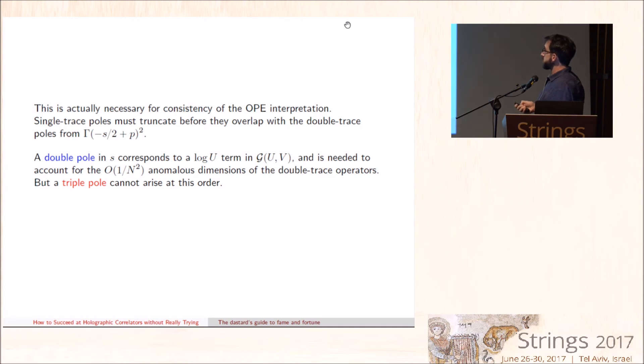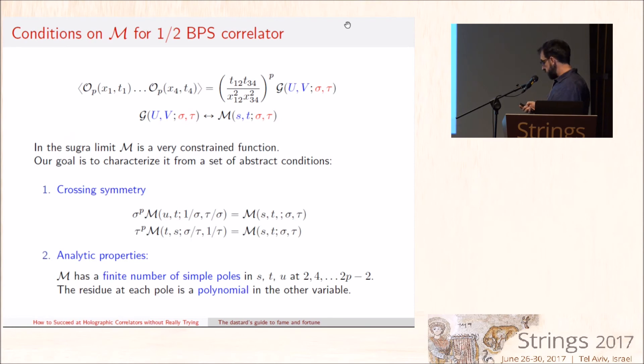If there wasn't a single trace pole that overlapped with a double trace pole, then we would find a triple pole, and a triple pole would give us a log-squared term. A single log of U has a natural interpretation as a correction to the anomalous dimension, but a triple pole could not arise at this order. So, the moral of the story is that we get to impose a set of abstract conditions on the Mellin amplitude M, which is the Mellin transform of this correlator G.